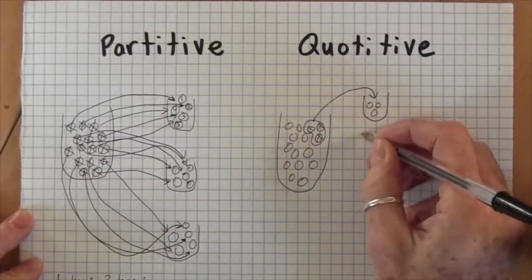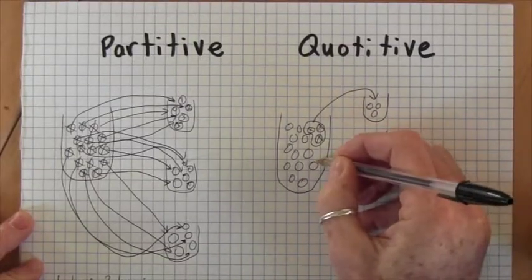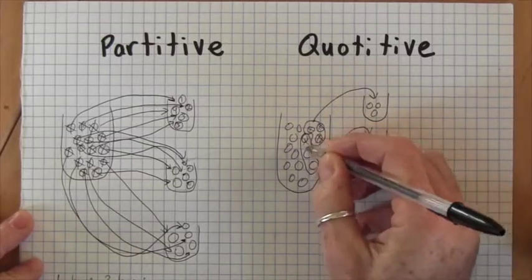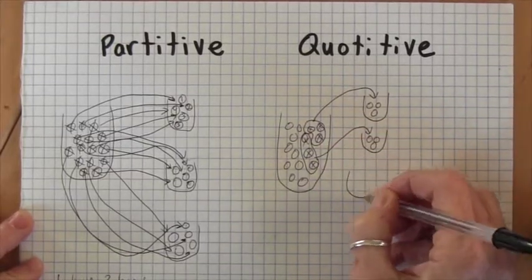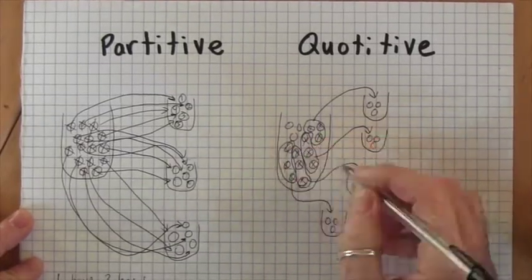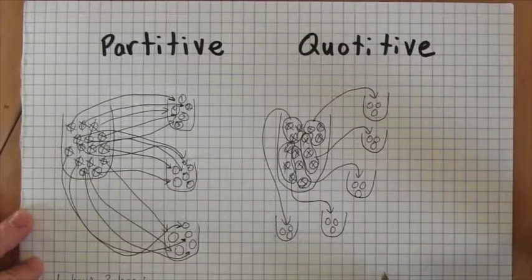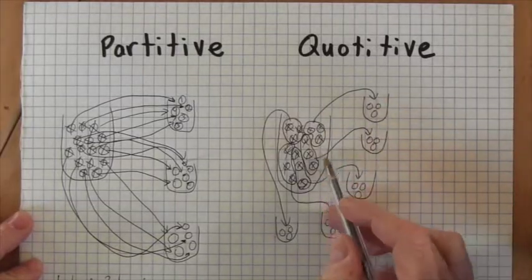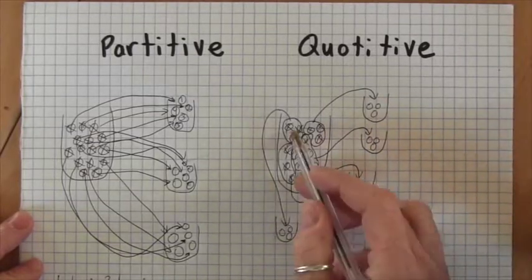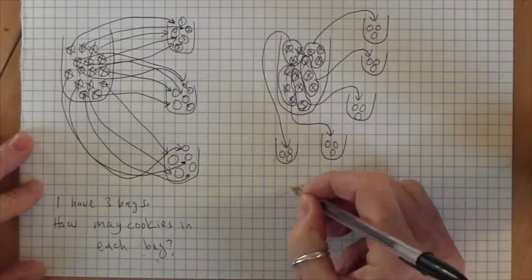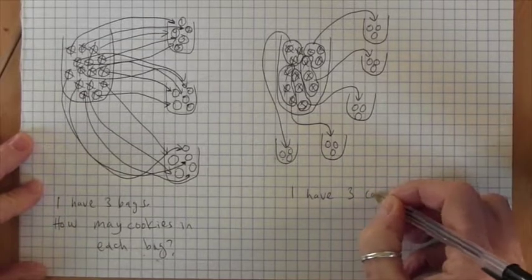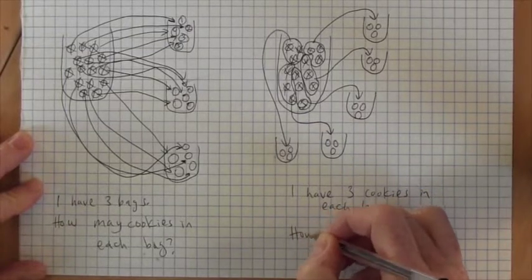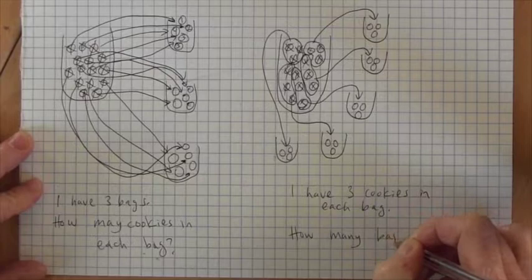I still have some cookies left over, so I can make another bag. I get another bag, take three more cookies, and put them in. This is the quotative way of thinking about division — parceling out the cookies one bag at a time, taking away three cookies at a time. I know from the start that three cookies go in each bag, and my question is: how many bags can I make?